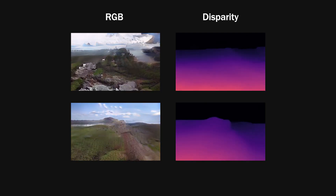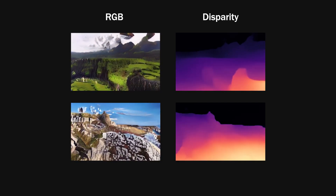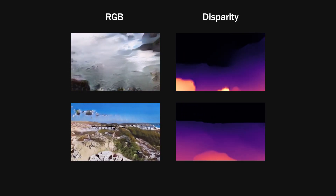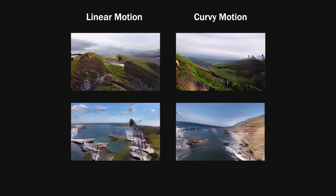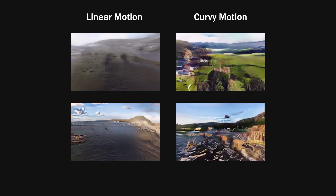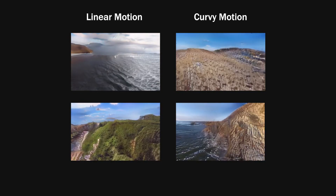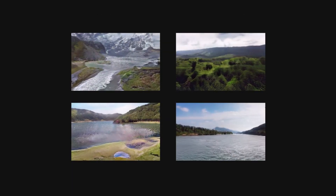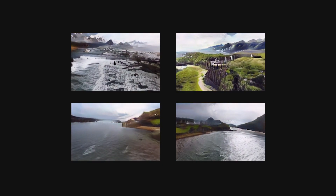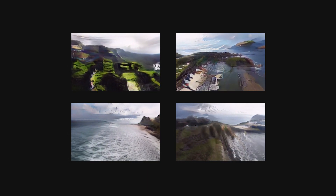As our approach generates both image and disparity, we can produce a disparity video as well. We can generate different videos from a single image by changing the style of the generated camera trajectory. Here we show two types of camera motions. While our model maintains local consistency between nearby frames, because it doesn't have a long term memory the landscape can change over time as the camera travels. Devising future methods that ensure global consistency is an exciting direction.